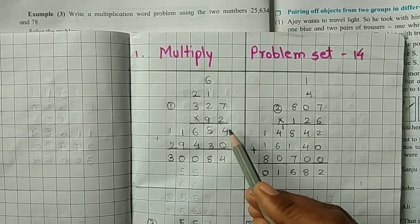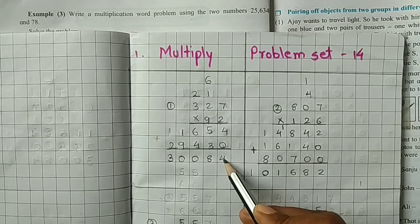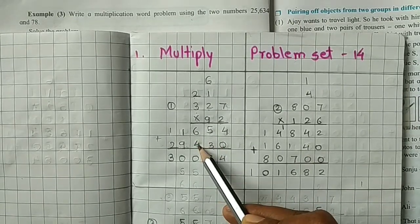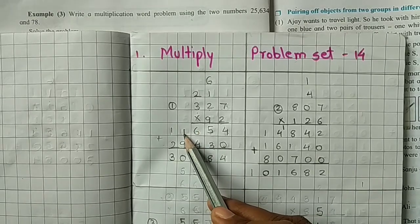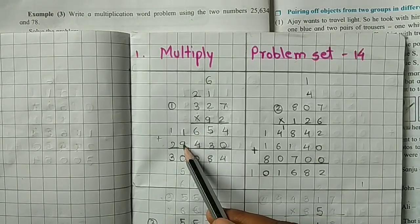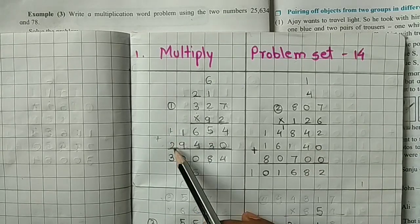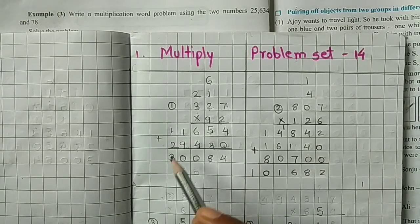And then everyone should add this. 4 plus 0, 4. 5 plus 3, 8. 6 plus 4, 10, here carried over, 1. Then 9 plus 1, 10 plus 1 plus 2, 3. So we get our answer.